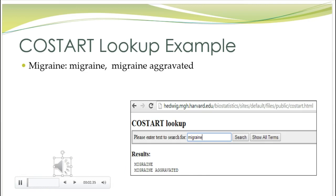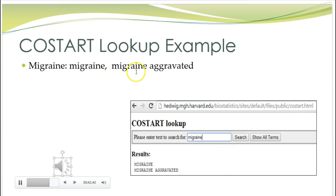I went into the COSTART lookup and typed in the text 'migraine.' You can either do search or show all terms — it doesn't make a difference — and it will list results telling you that migraine is the preferred term for both 'migraine' and 'migraine aggravated.' I want you to look up each of the five terms from the previous slide and write up the top two mapping or associated terms. In my example: migraine, colon — the term I looked up — and the first two related terms are 'migraine' and 'migraine aggravated.' If you're confused, send me an email. We have one more module after this — a review module for the exam — so get your assignments in on time.